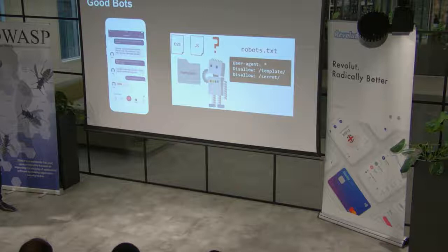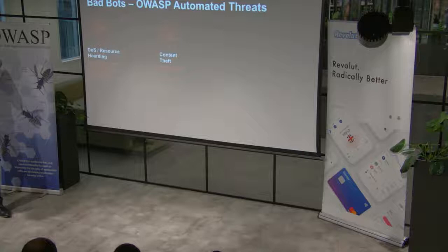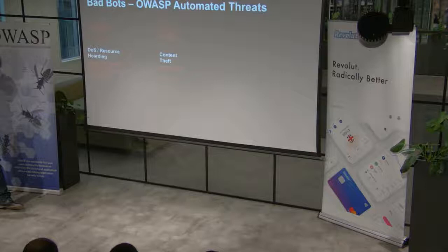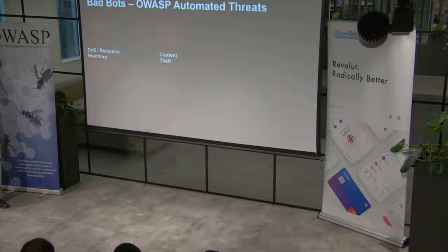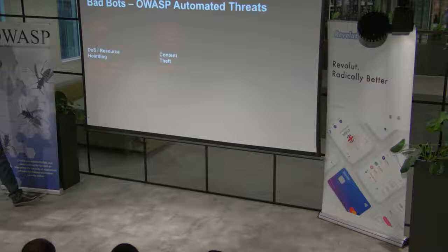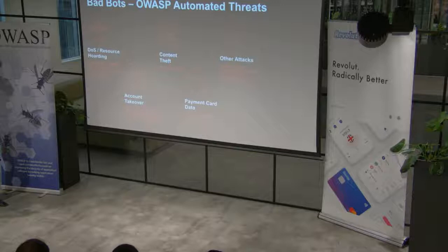Helpfully, OWASP have put together another top list. Most people have heard of the top 10 for web app attacks. They have a top 21 automated attacks — the top automated threats that web applications can face. For most people these are probably fairly familiar. If you think of bots, what problems will they cause your site? It's probably going to be some kind of denial of service — botnets creating huge amounts of traffic, taking down websites and networks. And scraping, which various industries like travel, retail and airlines face. But there's a whole raft more, some far more malicious. I definitely recommend reading the OWASP automated threat guide for much more detail on attack types and mitigation advice.